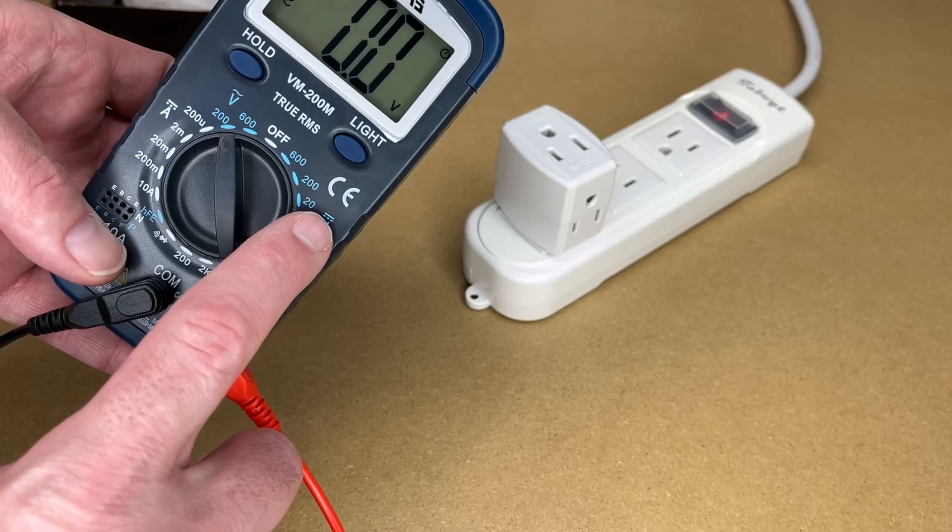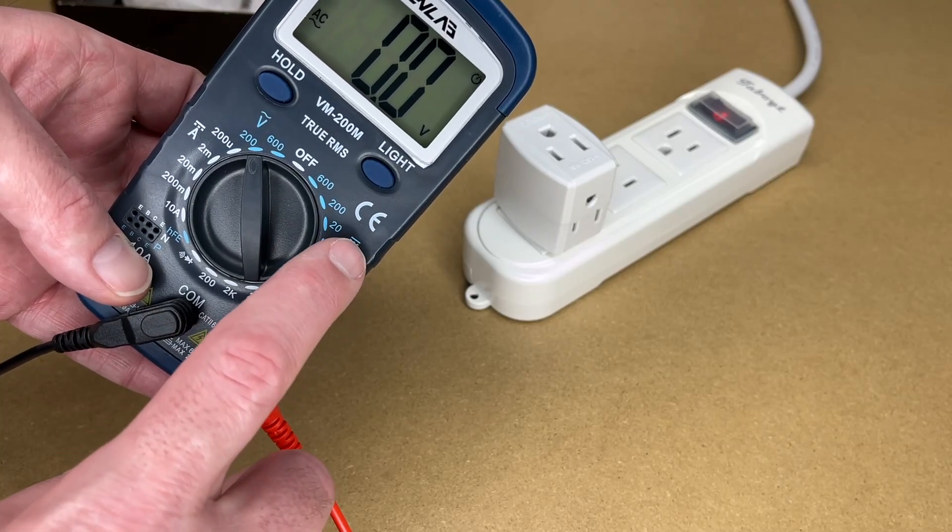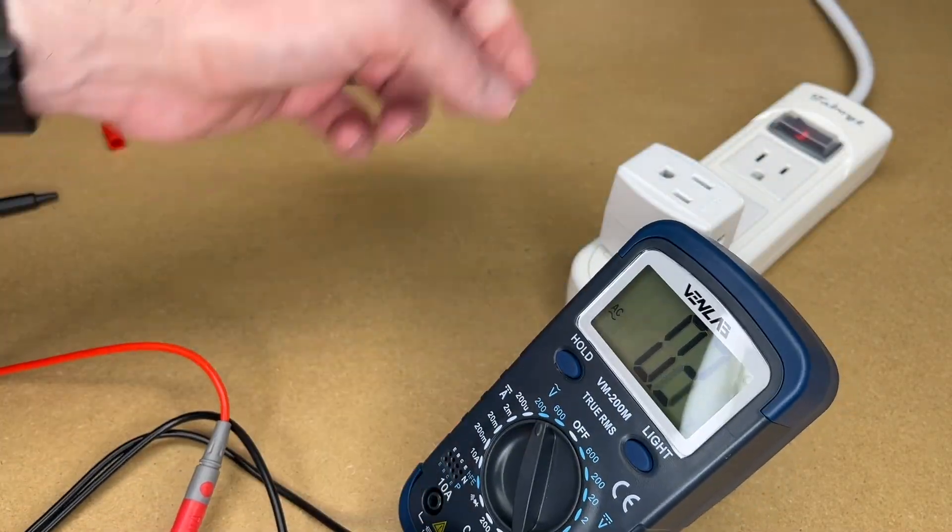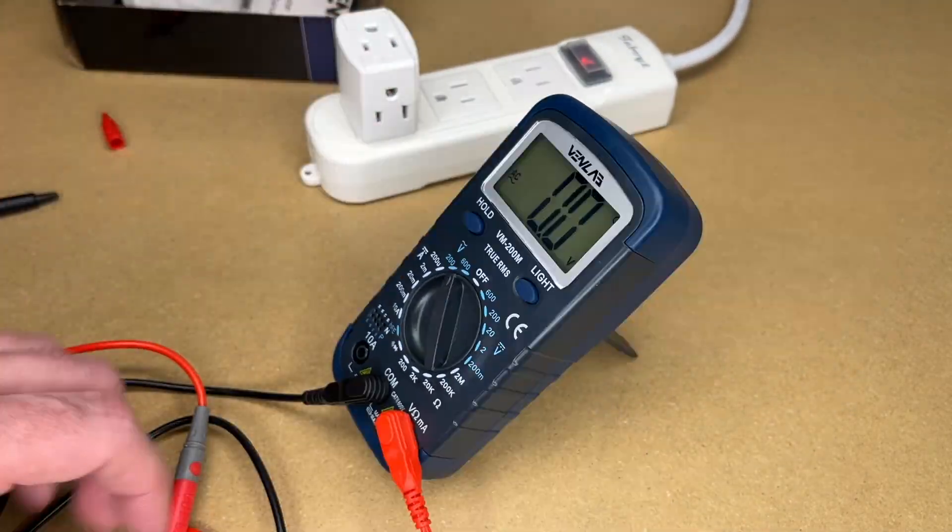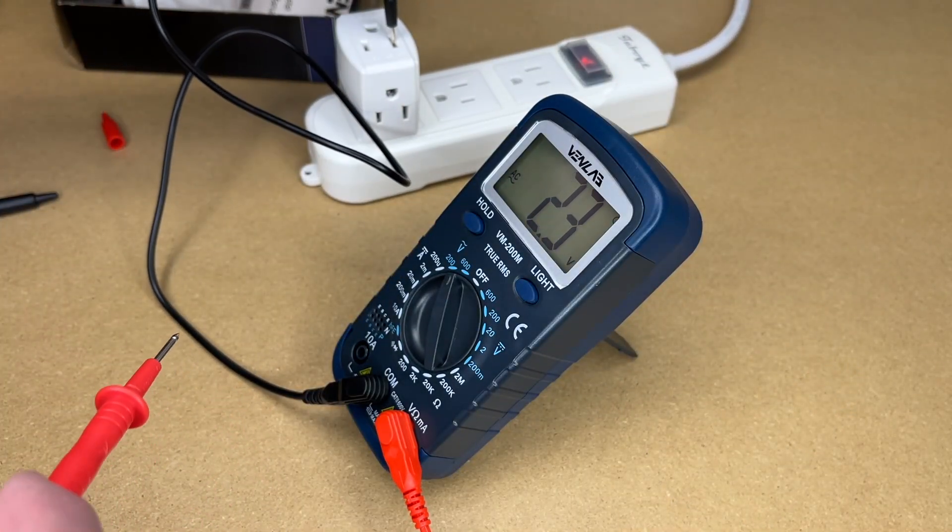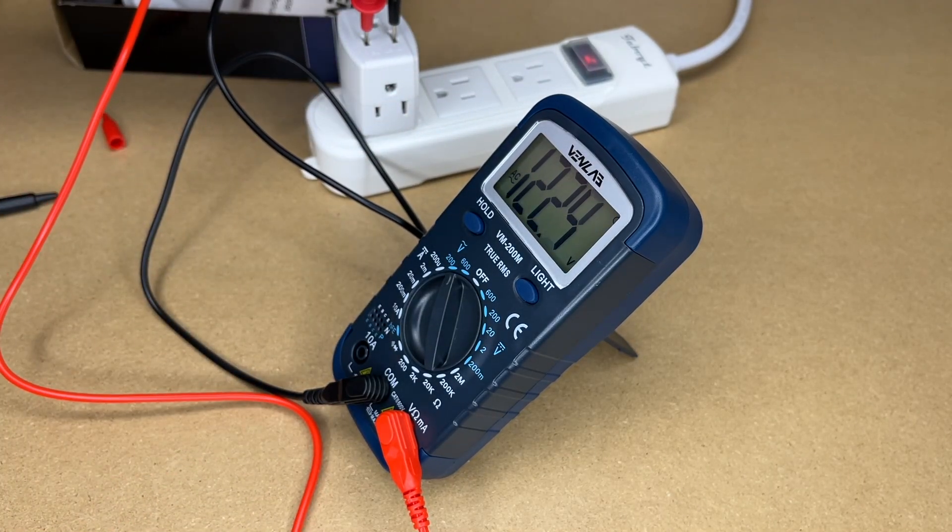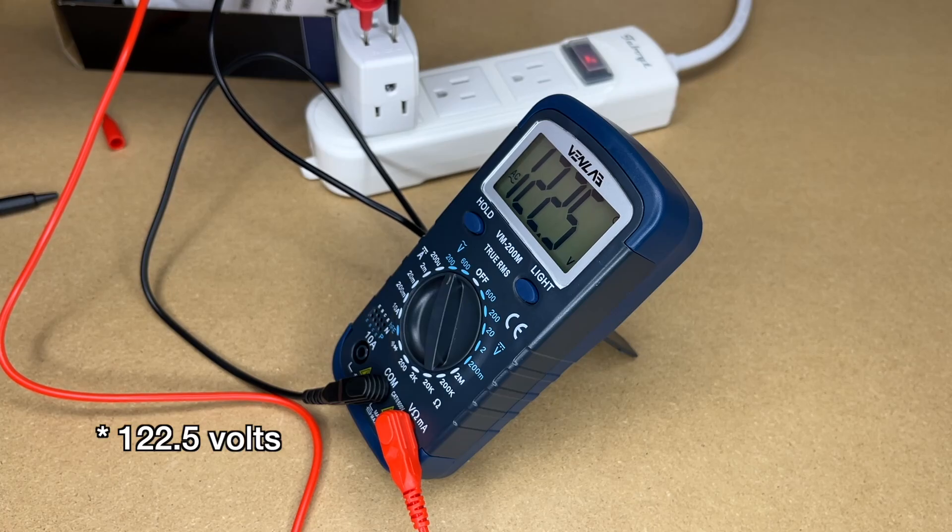I'll turn this to AC 200. You can see the difference here. The V with the straight line and dashed line is DC, and then the sine wave there is AC. Let's see if I can get that in frame here without glare, and I'll measure this outlet. We're getting 120.4 volts, 120.5 volts.